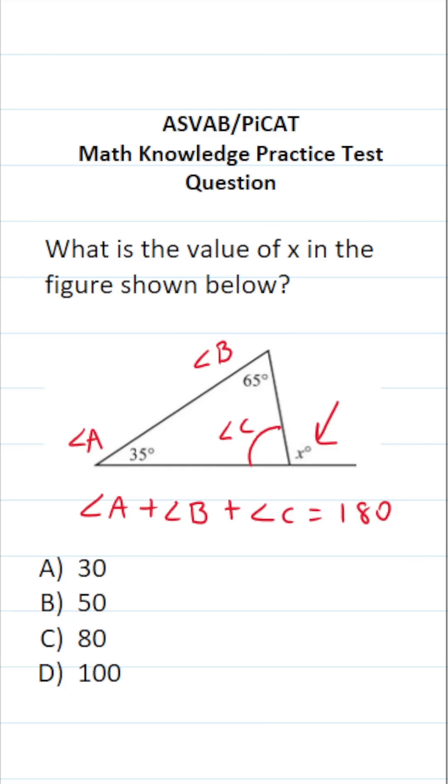So let's go ahead and solve for angle C here. This becomes 35 plus 65 plus angle C equals 180. 35 and 65, well 30 and 60 is 90, 5 and 5 is 10. So this becomes 100 plus angle C equals 180.